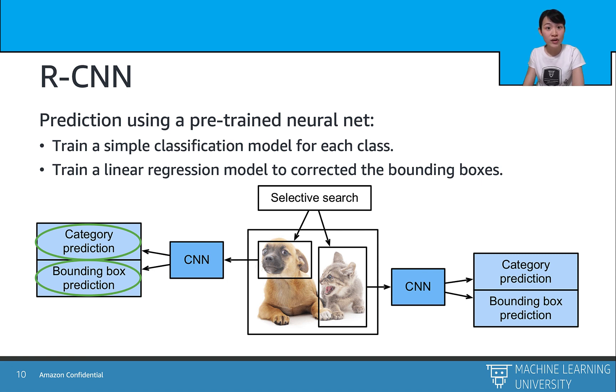And second, we train a linear regression model for a ground truth bounding box prediction for each proposed region. And that's all what you need to know for the R-CNN. Is that pretty straightforward?